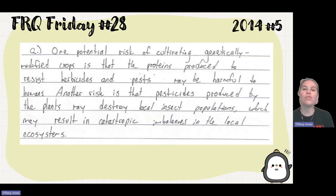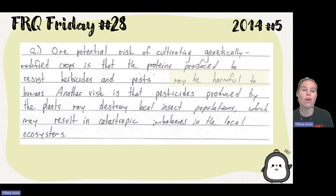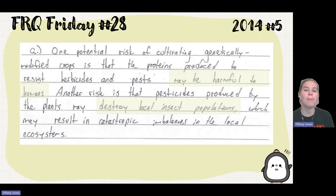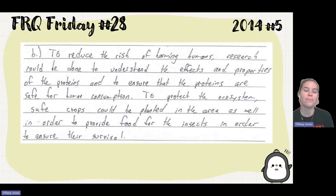One potential risk of cultivating genetically modified crops is that the proteins produced to resist herbicides and pests may be harmful to humans. Another risk is that pesticides produced by the plants may destroy local insect populations, which may result in catastrophic imbalances in the local ecosystems.